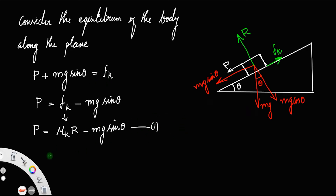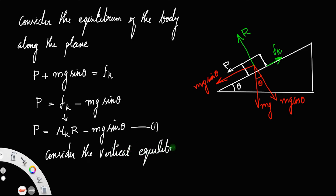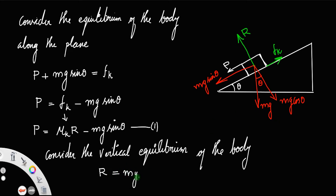Now let us consider the vertical equilibrium of the body. The forces acting upward, that is R, must be equal to the force acting downward, mg cos theta. So R must equal mg cos theta. Let us call that equation number two.